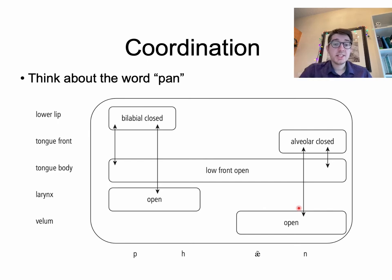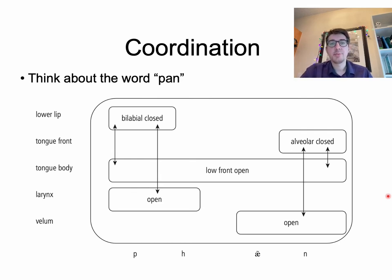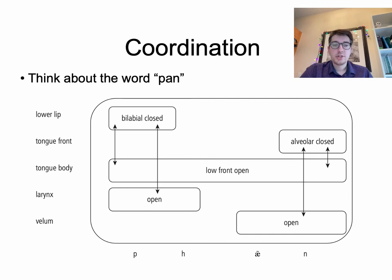Therefore we get lowering of the velum for the airflow to go through the nose, which begins even before the nasal — before the 'n' — and therefore we have a nasalized vowel, which we talked about in the last lesson. This is a highly frequent word in English. Another example is the verb phrase 'miss you,' which many of you would produce in co-articulated, fast speech, because we are coordinating all of these dimensions simultaneously.